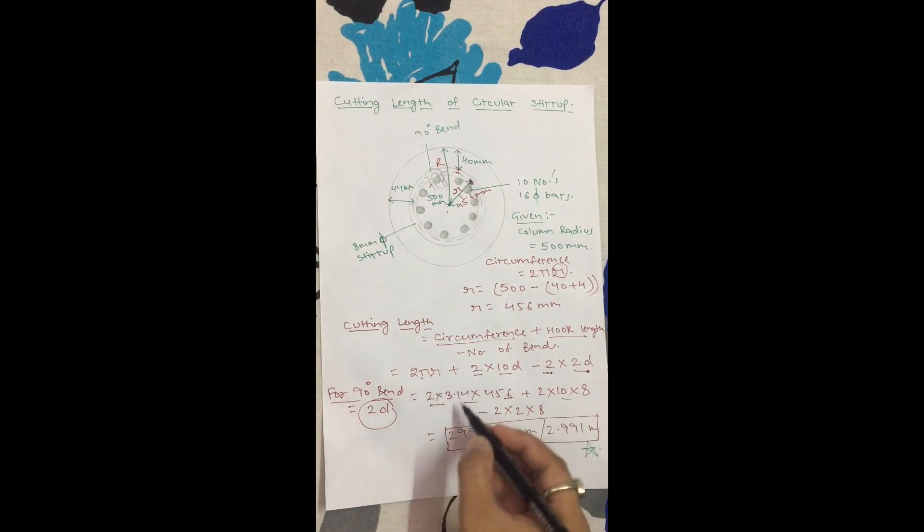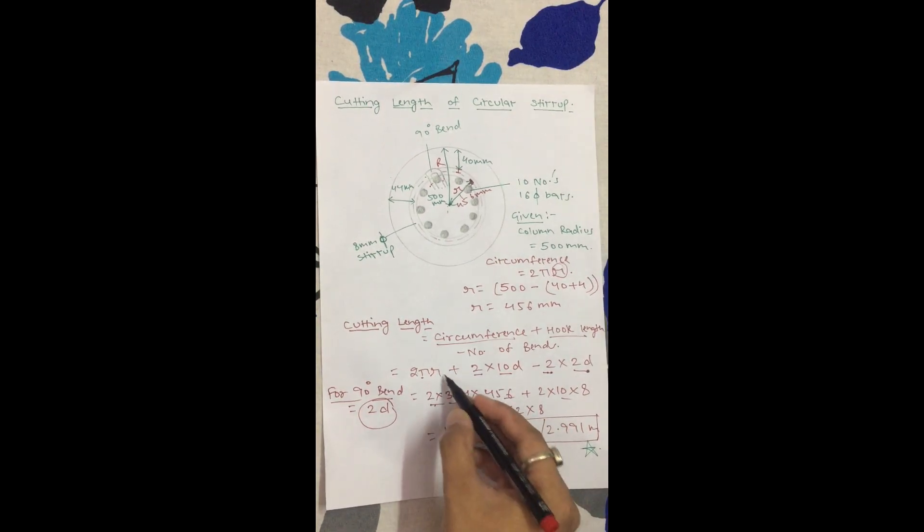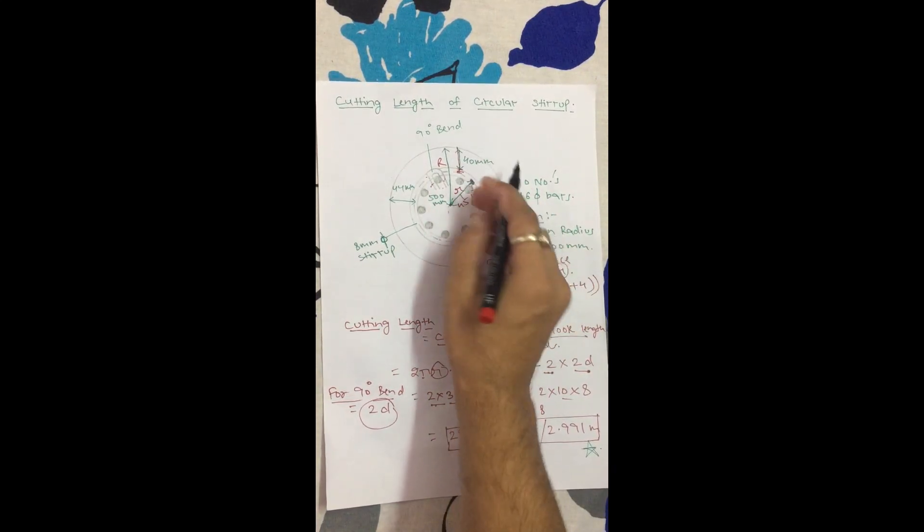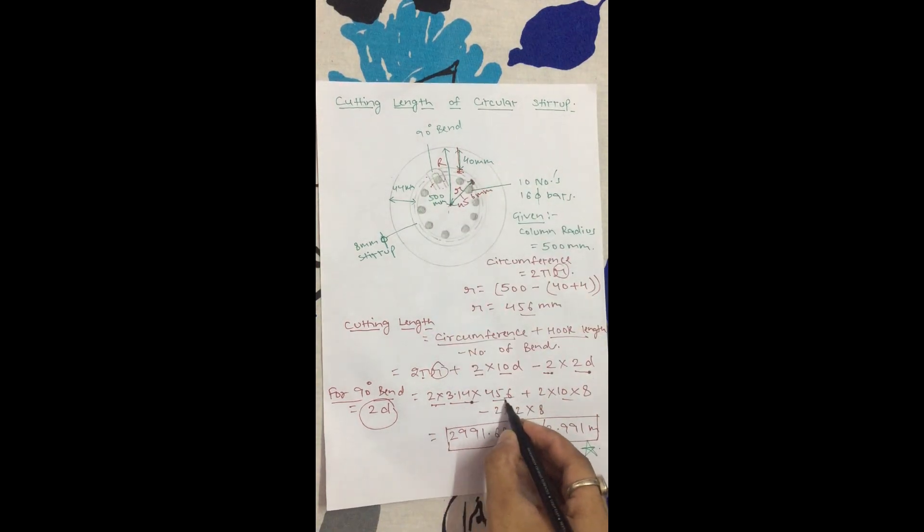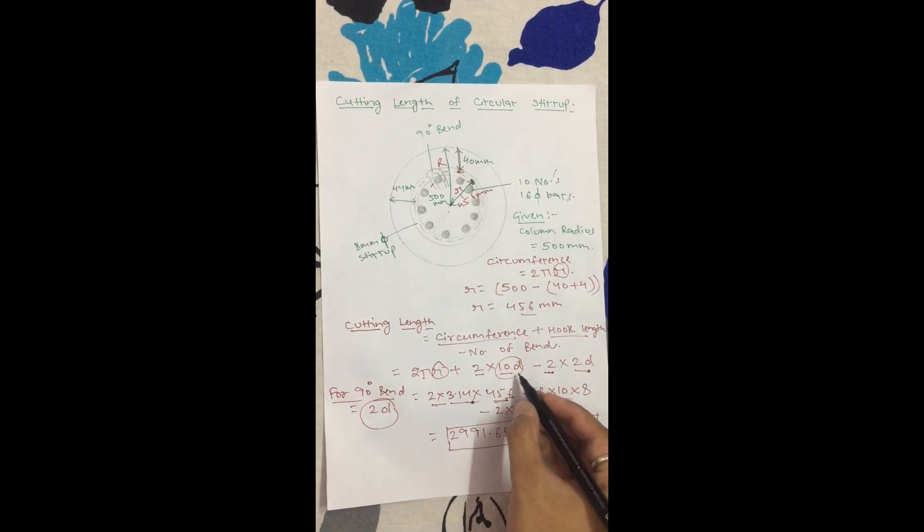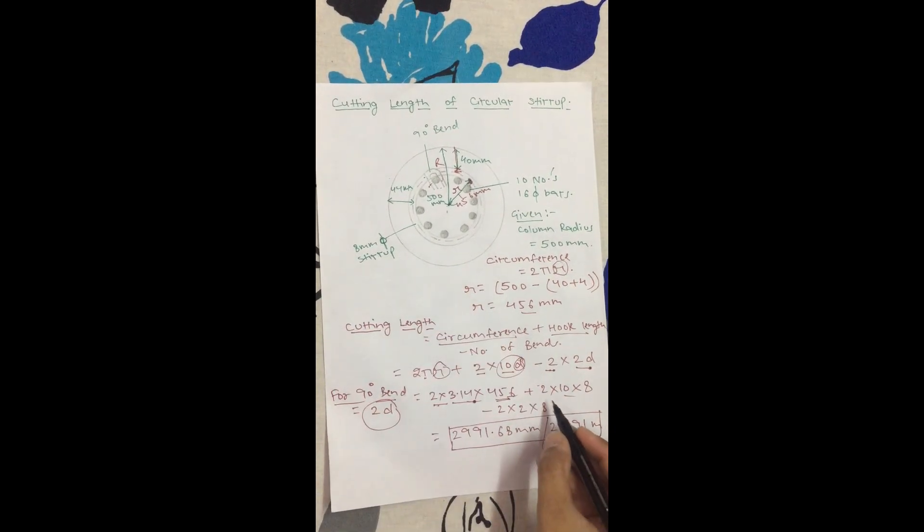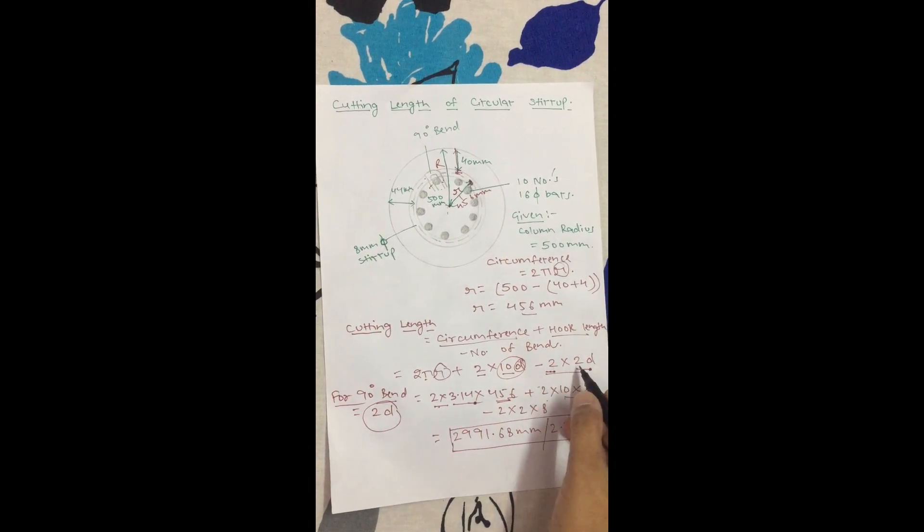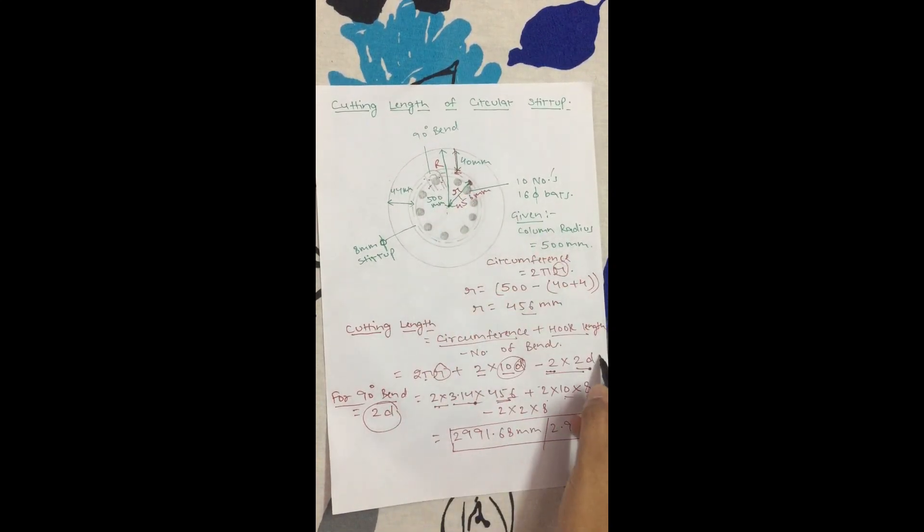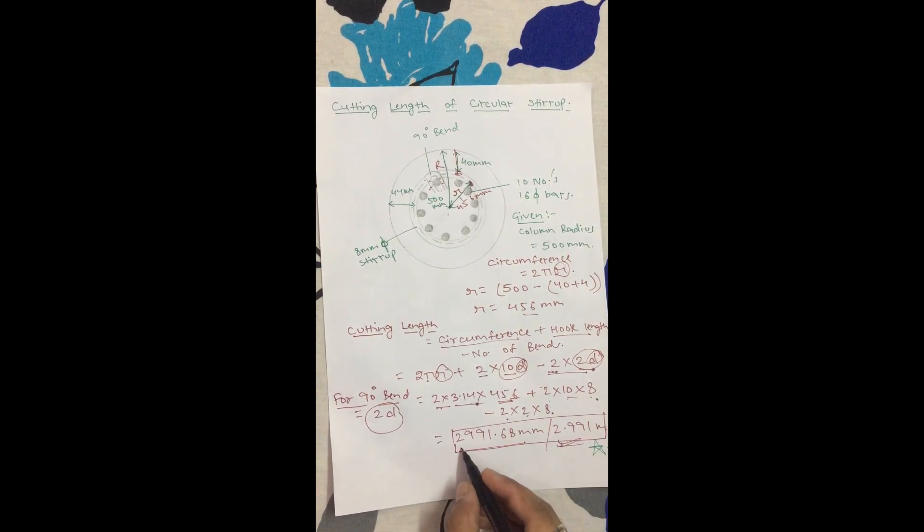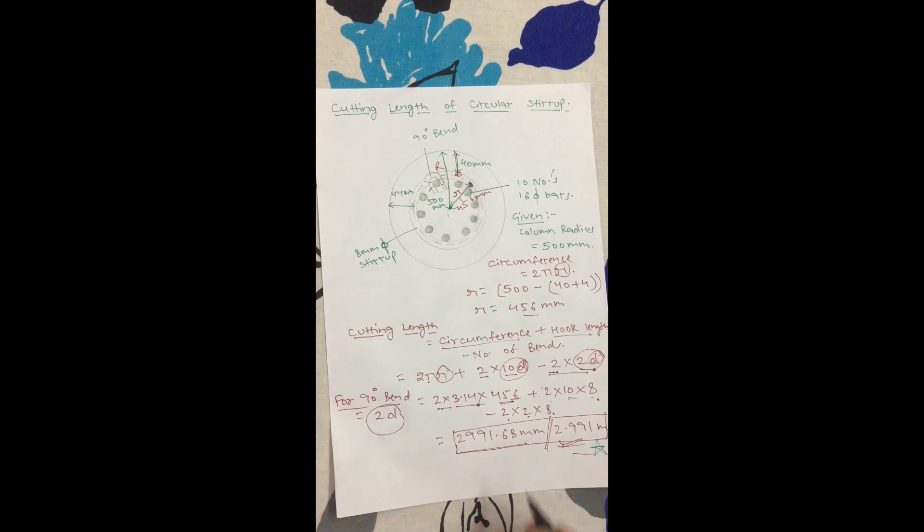Now you have to put values in the formula. 2 times pi - the pi value is 3.14 - times the radius, which we easily found out. The total is 500 minus 44, so our center-to-center distance is 456mm. Plus 10D for the hooks, where D is 8mm, so 2 into 10 into 8. Minus number of bends is 2, into 2D which is 8, so 2 into 2 into 8. So the cutting length is 2991.68mm. If you convert, the length is 2.991 meters. So this is our cutting length.